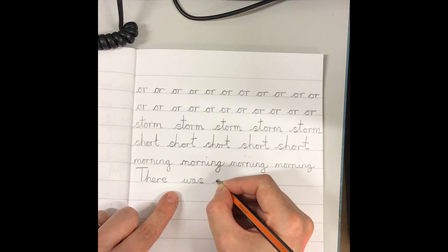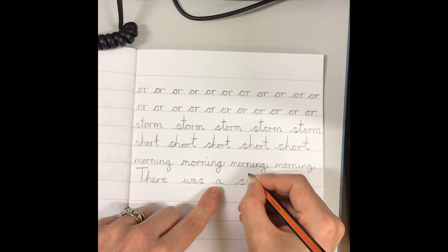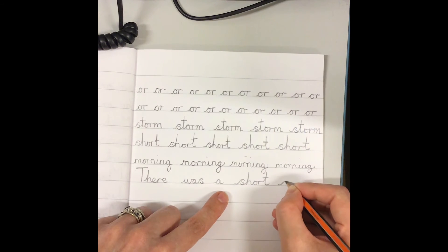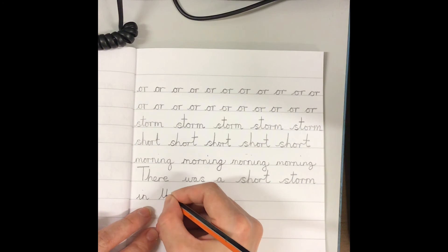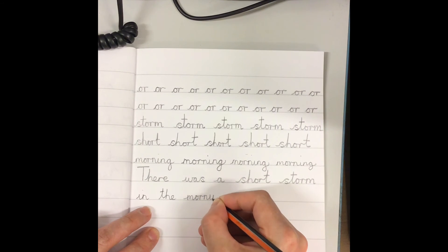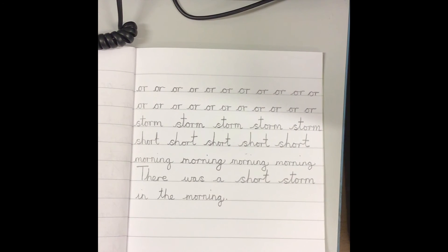There was a. Now we've already written the word SHORT and STORM. We've got a little short storm in the morning. We're there, full stop. So remember we write this sentence three times, so two more to go.